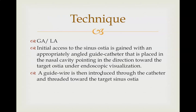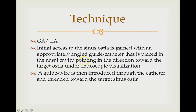Talking about the technique: it can be done under local or general anesthesia. Initial access to the sinus ostia is gained with an appropriately angled guide catheter placed in the nasal cavity, pointing toward the target ostia under endoscopic visualization. After placing the angled guide catheter, the guide wire is introduced through the catheter and threaded toward the target sinus ostia.